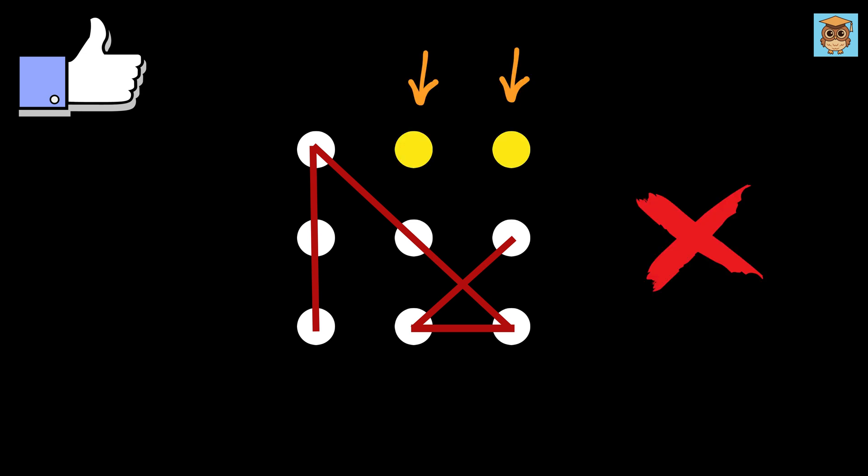Similarly, you can draw this line, then this line, then this line, and finally this line. Again, this is a valid move, but you can see that we have missed these two dots. Thus, it is also not the correct answer.